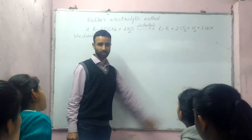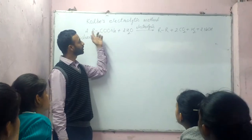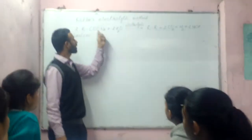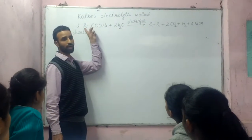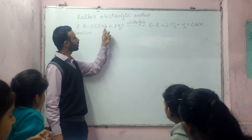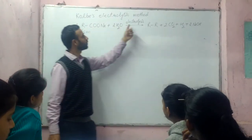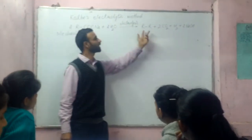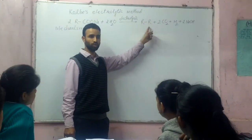This is called the electrolytic method. This method is used to prepare alkane from an aqueous solution of sodium salt of carboxylic acid. When we use the aqueous solution of sodium salt of carboxylic acid and electrolyze it, we get an alkane, and this alkane is formed at the anode.